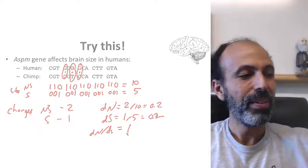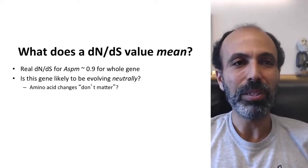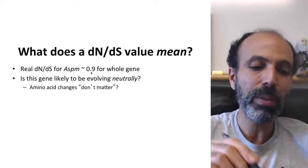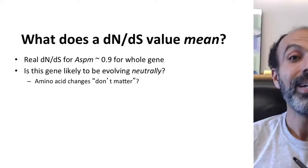So, what does that tell you? And this comes back to the question of what a dN/dS value really means. The real dN/dS for ASPM is actually 0.9, so that 1 was actually not too far off. So, is it likely this gene is actually evolving neutrally, this gene that affects brain size in humans? Is it very likely that any amino acid change to this gene has no fitness effect whatsoever? You can change it in any way, shape, or form. No.